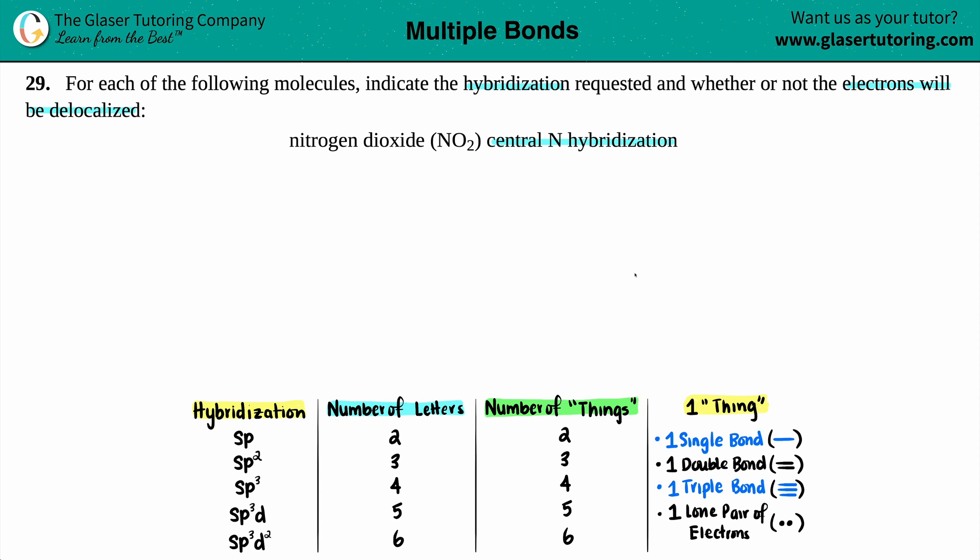This will be a quick overview because we have tons of other videos on the channel designated to drawing a Lewis structure where we have the steps laid out for you on the screen. They already tell us that the central nitrogen is in the center, so in this case for NO2 I have one nitrogen surrounded by the two oxygens.